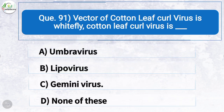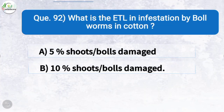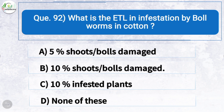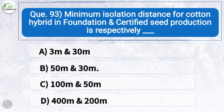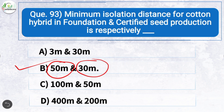Cotton leaf curl virus is — the correct answer is option C: gemini virus. Question ninety-two: What is the ETL for infestation by ball worms in cotton? The correct answer is option B: 10 percent shoots or balls damaged. Question ninety-three: Minimum isolation distance for cotton hybrid in foundation and certified seed production is respectively — the correct answer is option B: 50 meters and 30 meters.